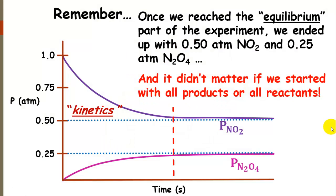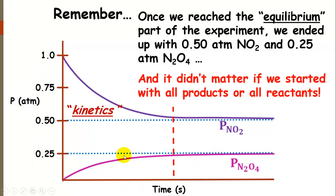Just another reminder: we did an experiment where we started with all nitrogen dioxide or all dinitrogen tetroxide, and in the end we came up with the exact same partial pressures of each gas after the system came to equilibrium. In the part of the curve where partial pressures are constant, that's the equilibrium part. The early part is the kinetics part, where the forward reaction rate is faster than the back reaction rate.